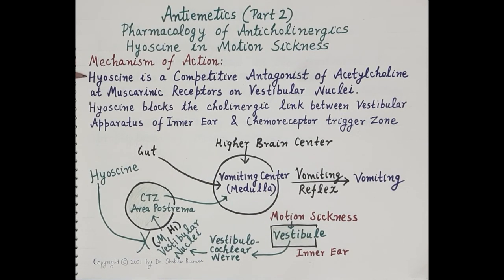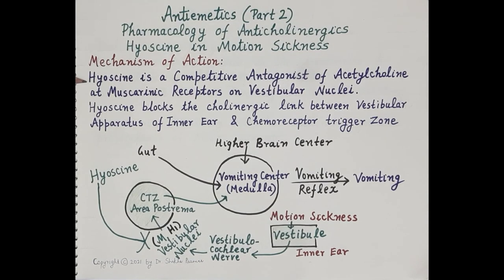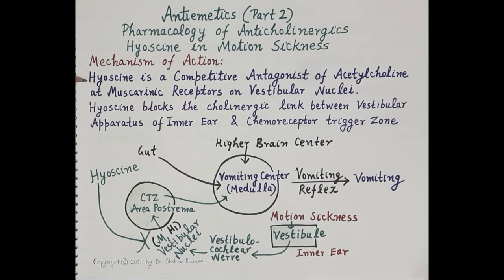Hyoscine is a competitive antagonist of acetylcholine — that means it is a muscarinic antagonist. Hyoscine competes with acetylcholine at the muscarinic receptors. It binds to the muscarinic receptors, thereby blocking them, and thus prevents binding of acetylcholine. Since acetylcholine cannot bind to muscarinic receptors in the presence of hyoscine, this results in loss of acetylcholine action. Hyoscine binds to acetylcholine muscarinic receptors on the vestibular nuclei.